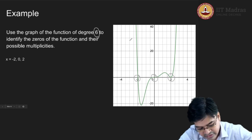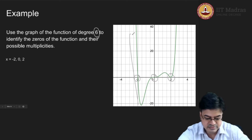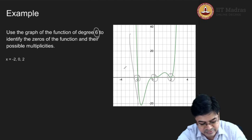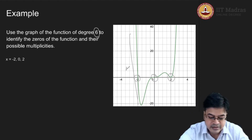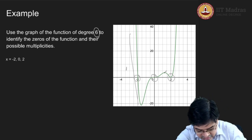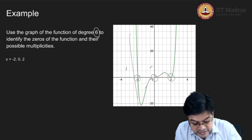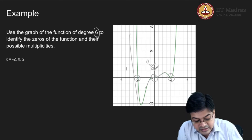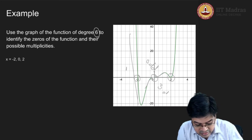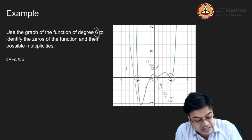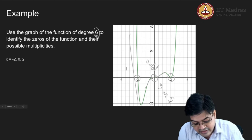At x equals minus 2, the behavior is more like a straight line — so the behavior is linear, it is a one-time event. At x equals 0, it has an S-shape — a somewhat twisted S-shape — which is indicative of odd degree: 3, 5, 7, or 9. But since the polynomial is of order 6, at most it can have multiplicity 5.